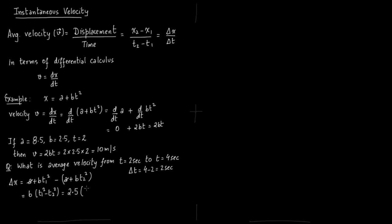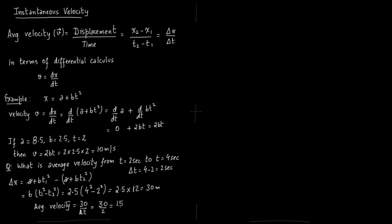The a terms cancel out, b is common. Taking t₁ = 4 and t₂ = 2, with b = 2.5, we plug in the values: 16 minus 4 gives 12, so delta x = 2.5 × 12 = 30 meters. Average velocity is displacement divided by change in time, so delta x / delta t = 30 / 2 = 15 meters per second.